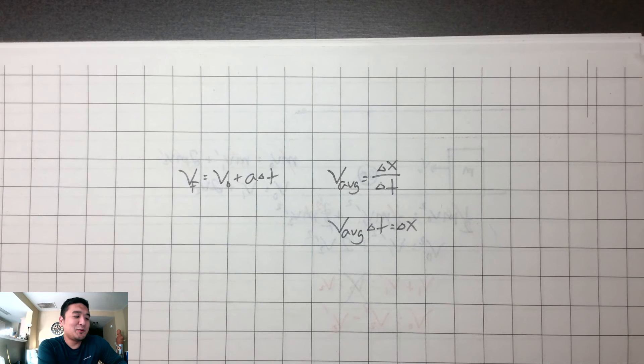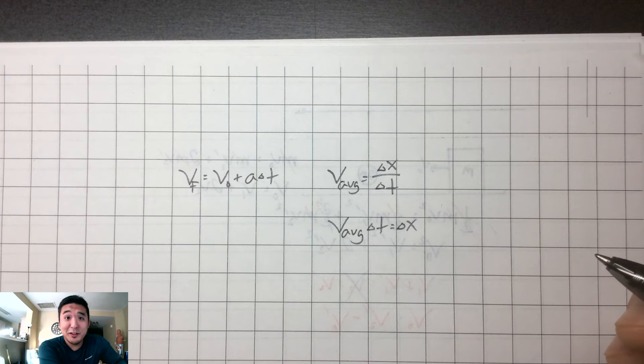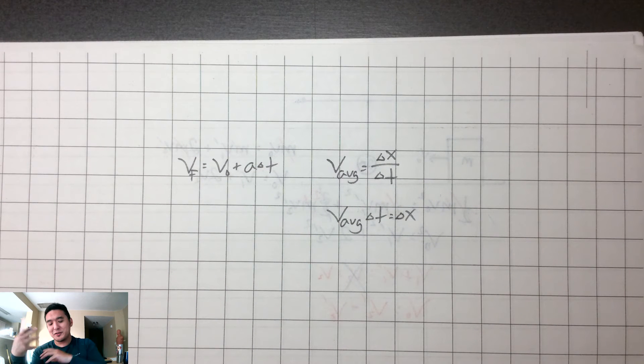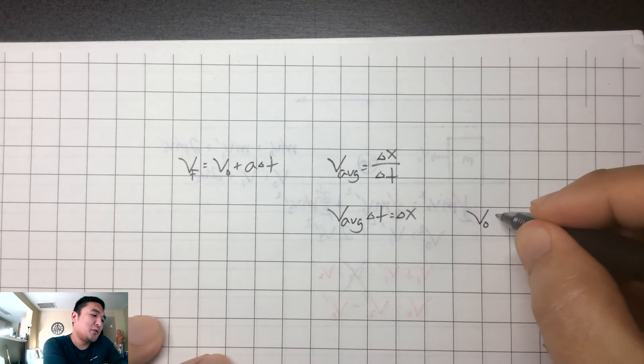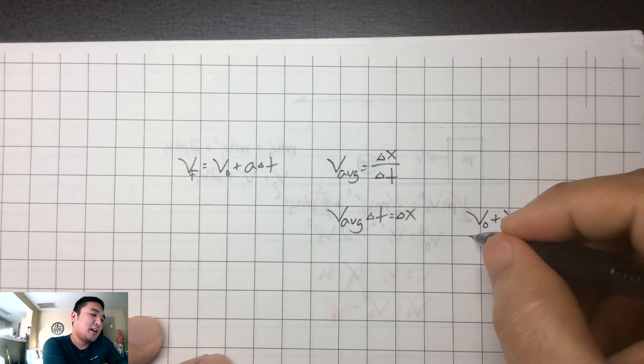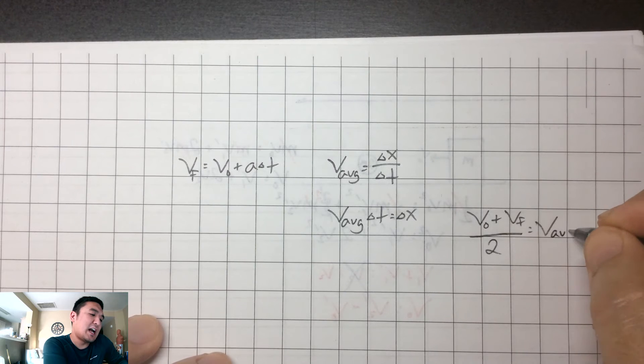And so what else could we do with this? One other thing that we can do is we can look at what it is to have average velocity. So how do you find an average? Well, you do it with your grades all the time. You add up all the individuals and you divide by the number of things that you added up. And so to find the average here, assuming constant accelerations, we would do the initial plus the final velocity. And there are two things there, so we're just going to divide that by two. And that's your average velocity.